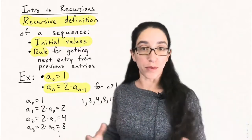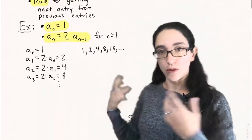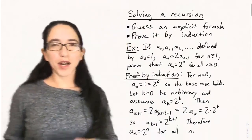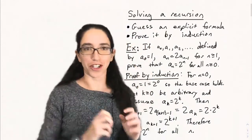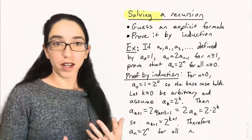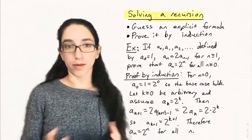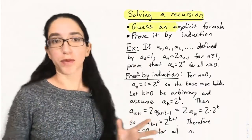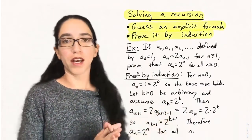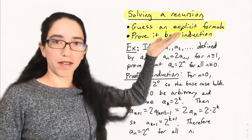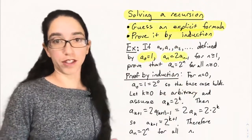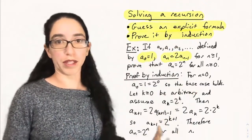We can see that pattern pretty easily in this example, but then we'll see more complicated recursions. Now, how do we solve a recursion? It means to find an explicit formula for what the nth term of the sequence is. This isn't always possible. Sometimes it's good enough to just have a recursion, but sometimes it's useful to have an explicit formula — something that doesn't depend on previous terms, just a formula in terms of n.